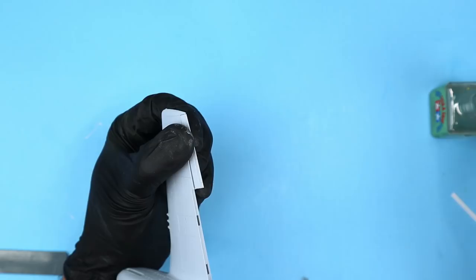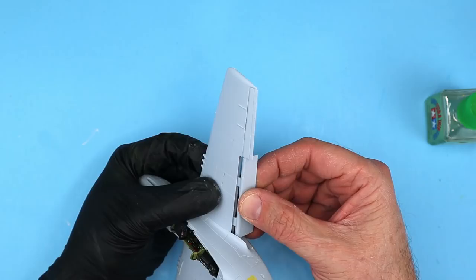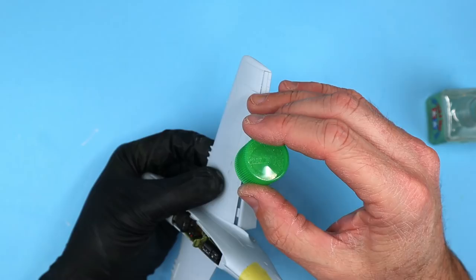The ailerons are provided as separate pieces so I added those at this point. After those are installed I add the drop flaps to both the right and left wings.